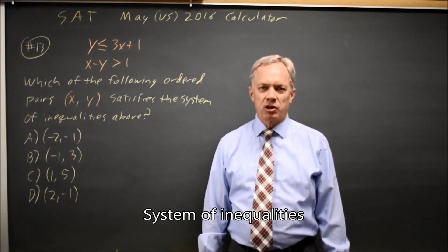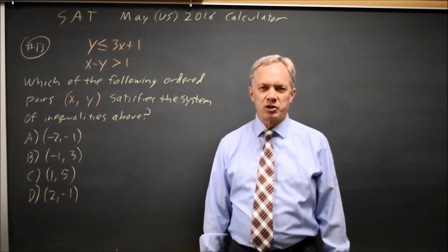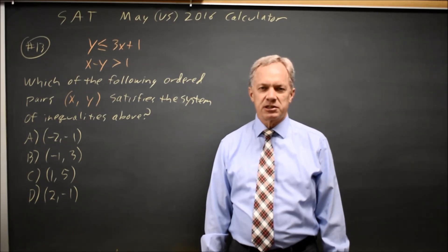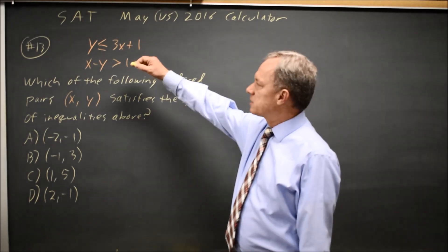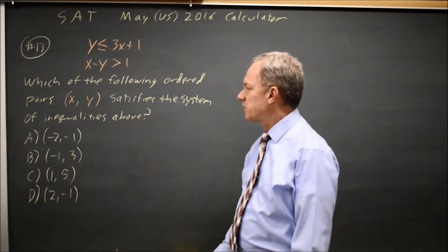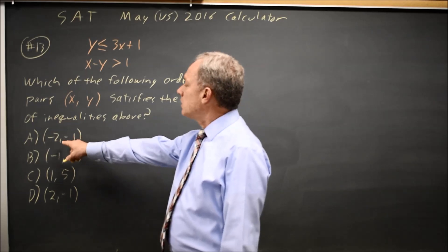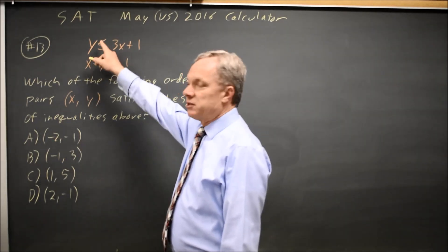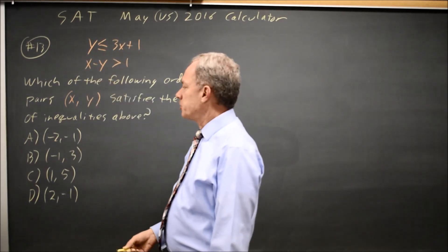This is calculator question number 13 in practice test 5 from the 2018 College Board Prep Book, which is also the May 2016 U.S. exam. College Board gives us a system of inequalities and asks which of these pairs satisfies the inequality, which means if you put X and Y into both inequalities, both inequalities will be true.